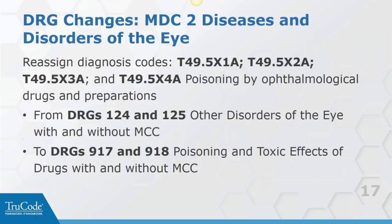Moving to MDC2 - disorders of the eye. They've moved T49.5X1A and its related codes - poisoning by ophthalmic drugs and preparations - from DRGs 124 and 125 for disorders of the eye to DRGs 917 and 918 for poisoning. If a patient swallows eye drops, so they're poisoned by an ophthalmic drug, that's not an eye disorder - that's a poisoning. So it should be classified to the poisoning DRGs. CMS looked at it and agreed, and made the change.